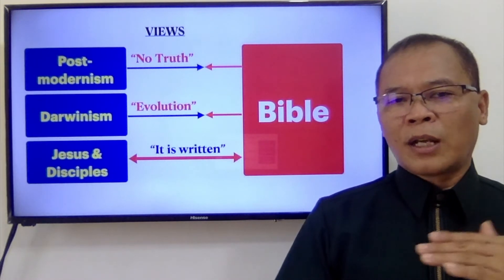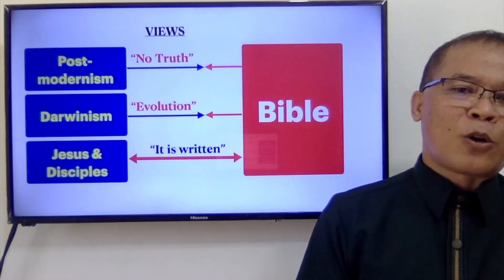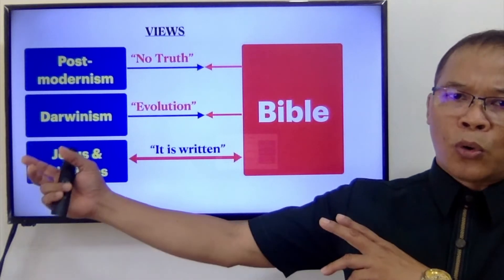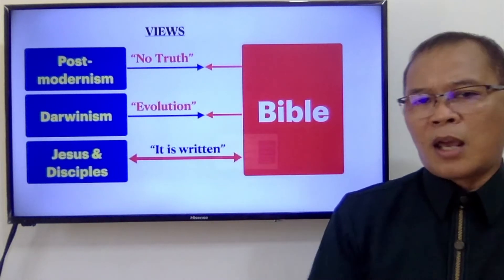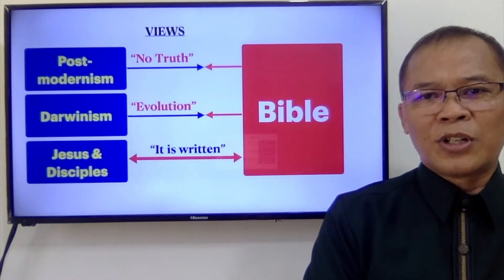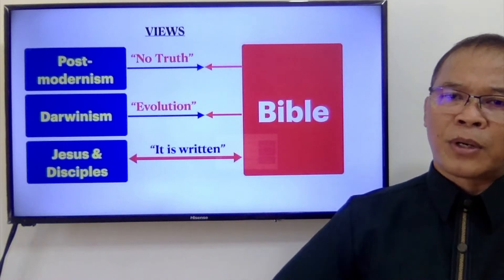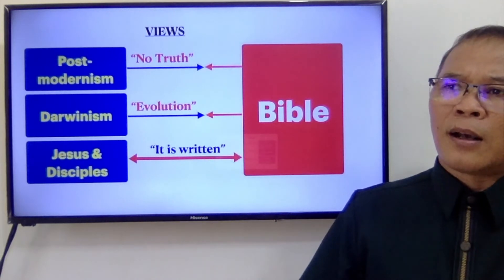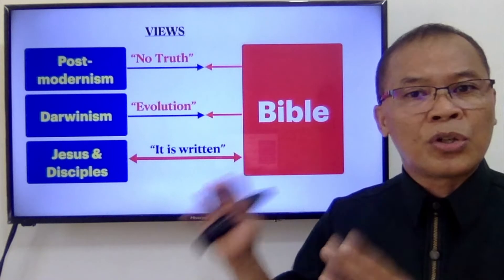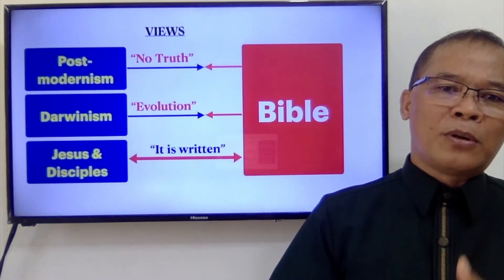These philosophies are contrasted with the philosophy of Jesus Christ and the disciples. When Satan tempted Jesus, Satan also quoted from the scriptures, and Jesus defended himself using the scriptures. Jesus said 'it is written,' therefore Jesus regarded the Bible as supreme — the authoritative book that would guide conduct, decisions, and all ethical situations. That is why our Bible study this week is entitled 'Jesus and the Apostles' View of the Bible.'